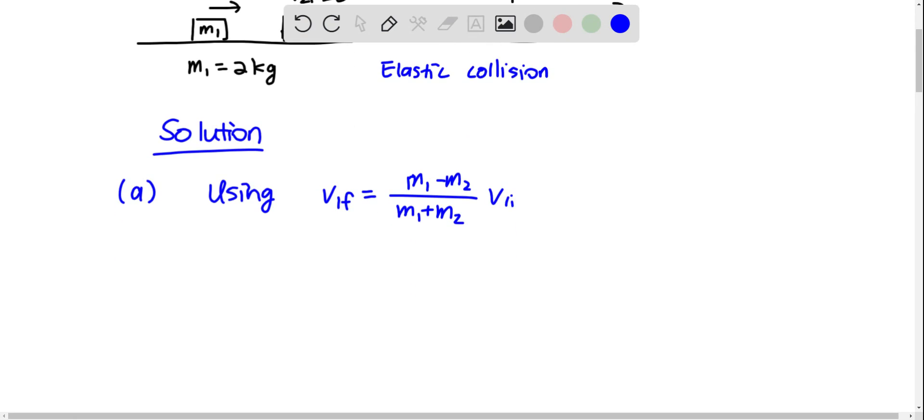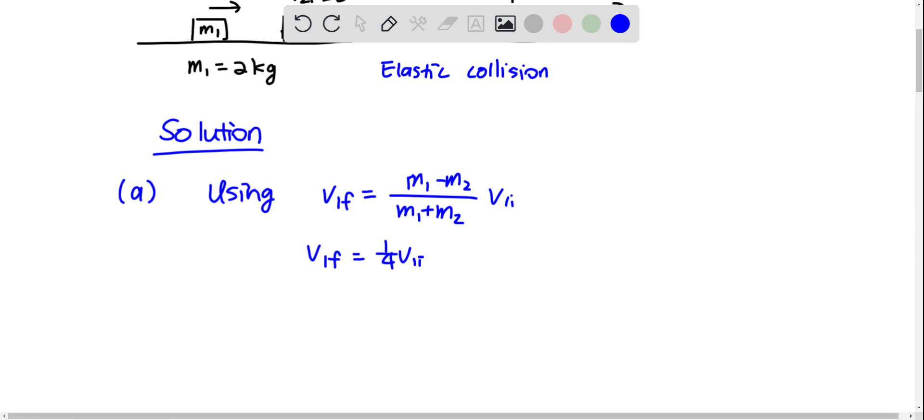And we are given that V1f is a quarter of V1i. So we have M1 minus M2 divided by M1 plus M2 equals a quarter.